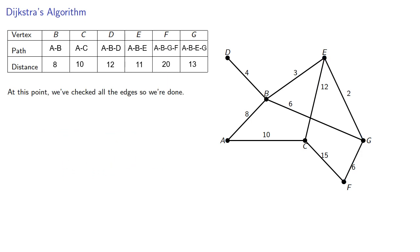And at this point, we've checked all of our edges, and so we're done. Also, since we've updated the actual path, we now know the route that gives us the shortest path, and so if we want to navigate from A to any place else, we know how far it will be, and what route will give us the shortest distance.